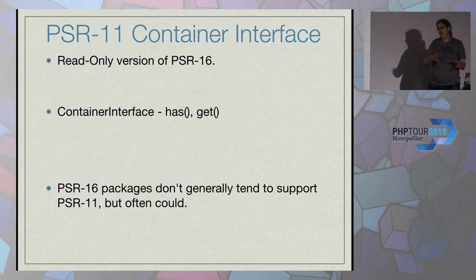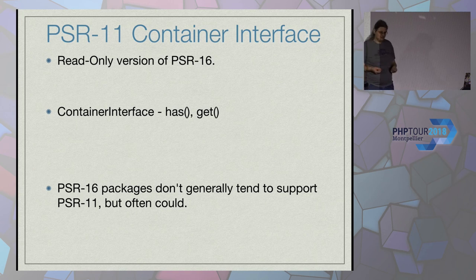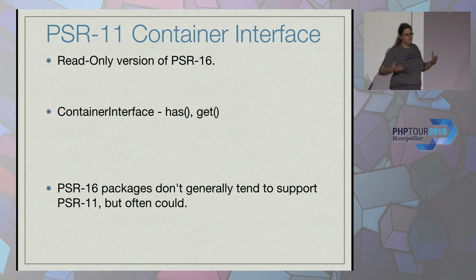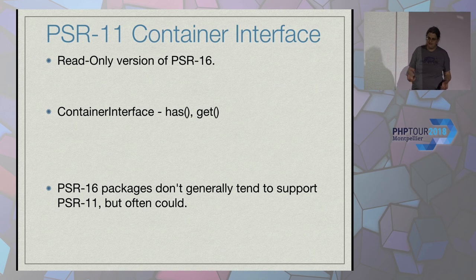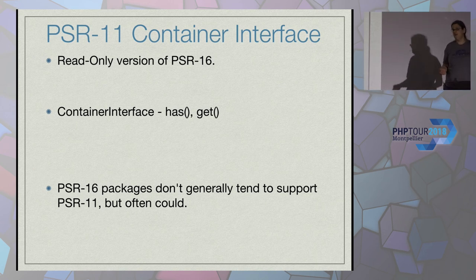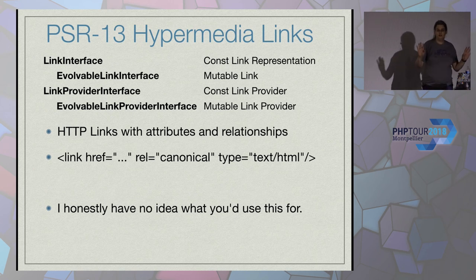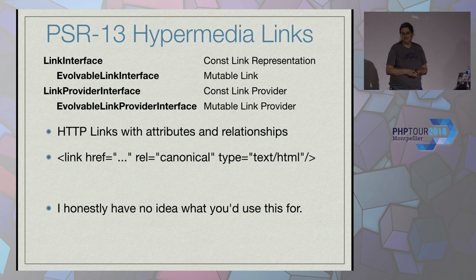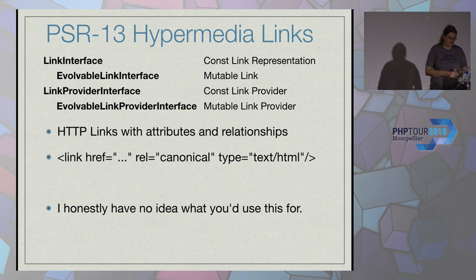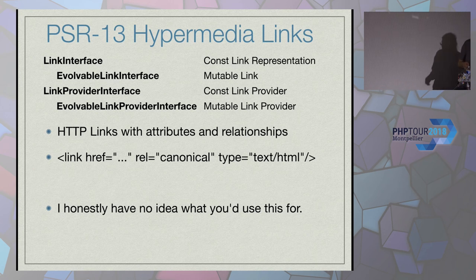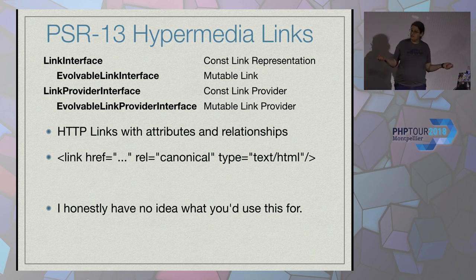PSR-11 is sort of the read-only version of PSR-16, and even simpler. It's not caching-specific — if you have just a big dictionary of values, you can expose a PSR-11 interface on that, and anything that can consume PSR-11 will pull your values out. PSR-13 is for hypermedia links — the things that show up in the head block of your HTML documents, formalized into PHP objects. Nobody can tell me what this is actually used for. One of the requirements for a PSR to become official is that there must be at least two existing implementations out in the wild — so if somebody is using it, I'm not that someone.